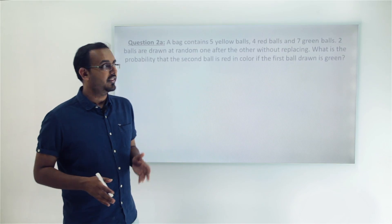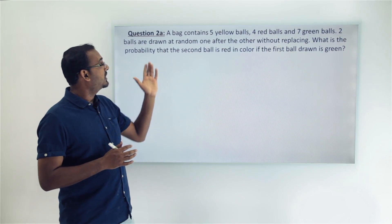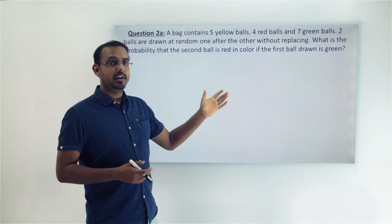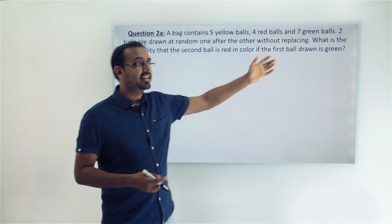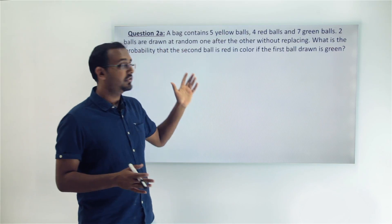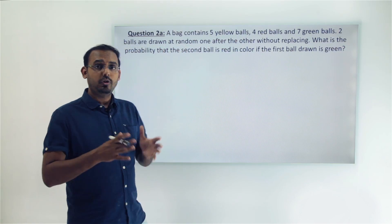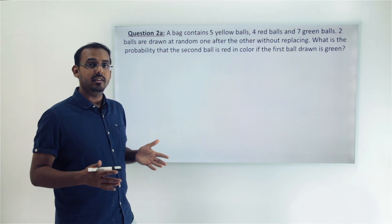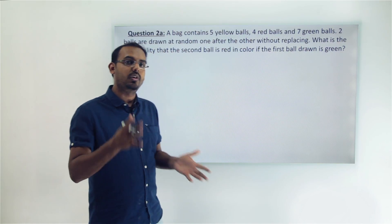The question tells us that in a bag, we have put five yellow balls, four red balls, and seven green balls — a total of 16 balls. Out of this bag, we draw two balls at random, one after the other, without replacing.